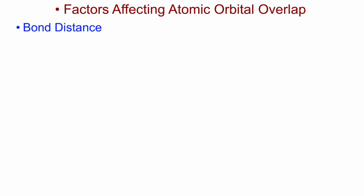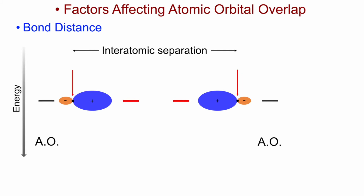Another factor that affects the overlap of atomic orbitals is the bond distance between the atoms. Let's consider two identical atoms — shown here with their constituent atomic orbitals at the same energy level, and the interatomic separation indicated. I'm showing an sp3 hybrid orbital. The key point is that the orientation of the hybrid orbital on one atom and on the other is set up so that as they approach, they should give in-phase overlap. But if they're far apart — clearly greater than the radial extent of the orbitals — there is no actual overlap and no change in energy.